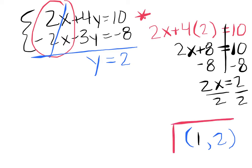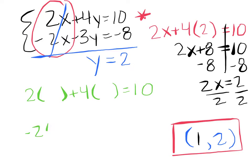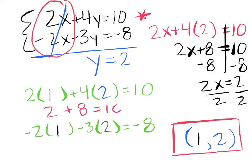Our final solution is the point (1, 2). How do you know if your solution is right? Just like when we used substitution, you can plug these into the original equations. 2 times 1 plus 4 times 2 should equal 10 — that's 2 plus 8, which is 10. True. And negative 2 times 1 minus 3 times 2 should equal negative 8 — that's negative 2 minus 6, which is negative 8. Our system checks out. We looked for opposites, and then we combined.